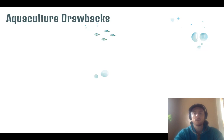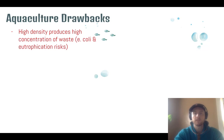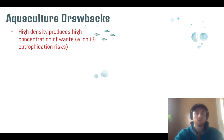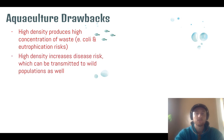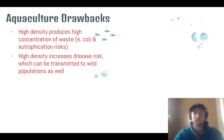One of the big drawbacks of aquaculture is just like with CAFOs on land — the high density of animals means we're going to have a really high density of waste concentration. This can lead to outbreaks of E. coli in the water, or it could cause eutrophication with all the excess nitrogen in their waste. High density also means there's a high probability of disease outbreak, and because these fish are kept in cages in the water, disease can easily reach wild populations and spread through those organisms as well.